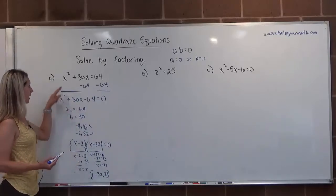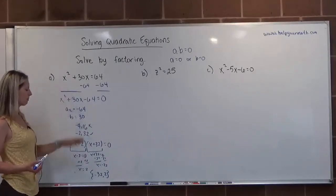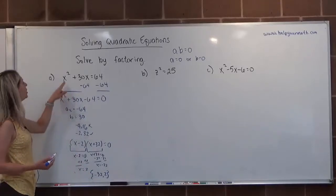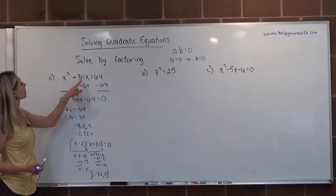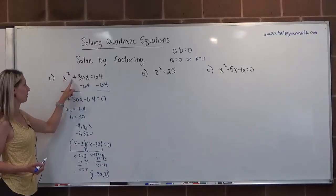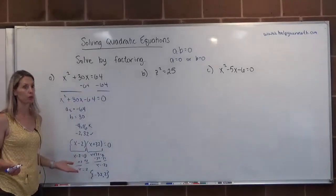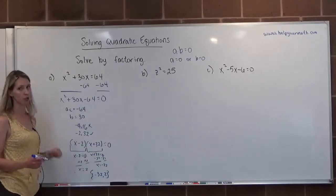What that means is that if we went back and plugged it into the original, it should make a true statement. So I don't know what negative 32 squared is, so I'm going to check with 2. 2 squared is 4. 30 times 2 is 60, and 4 plus 60 is 64. Presumably, if you plugged in negative 32, it would also work. So two solutions for letter A.